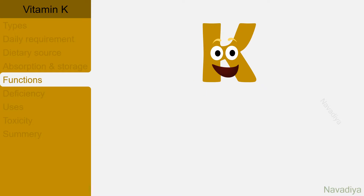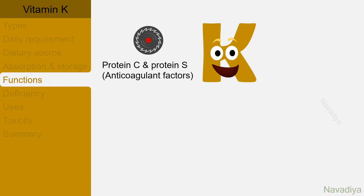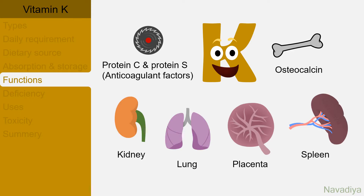Similarly, vitamin K is also required for carboxylation of protein C and protein S, both of which are anticoagulant factors, as well as osteocalcin found in bones and some proteins in the kidney, lungs, placenta and spleen.